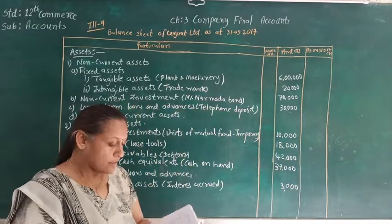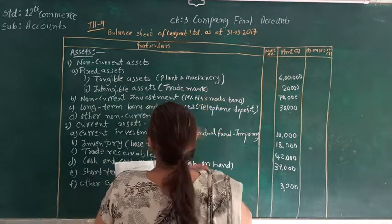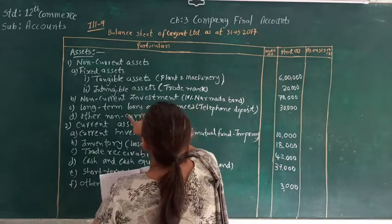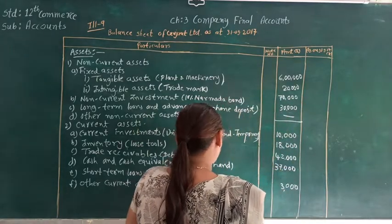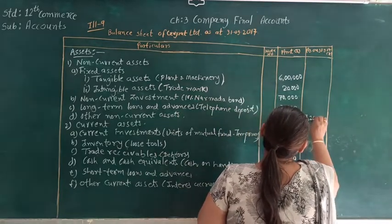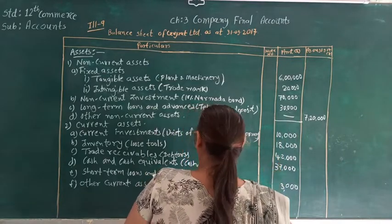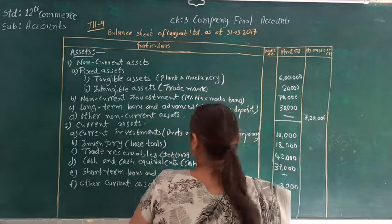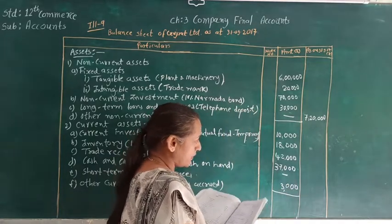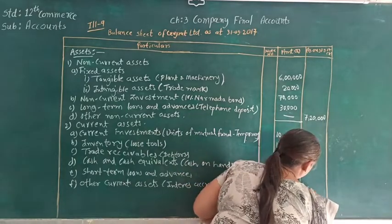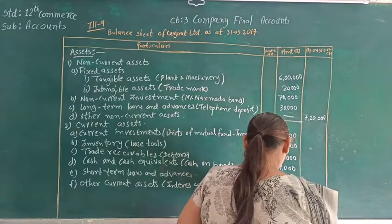This is how we mention all the assets. Now let's make the total. Under non-current assets we have tangible asset, intangible asset, non-current investment, and long-term loans and advances — other non-current assets are not there. The total is 6,00,000 + 20,000 + 17,000 + 30,000 = 6,67,000. Under current assets we have current investment 10,000, inventory 18,000, trade receivable 42,000, cash and cash equivalent 37,000, and other current assets 3,000 — total 1,10,000. So total of all assets will be 8,30,000 (approximately).